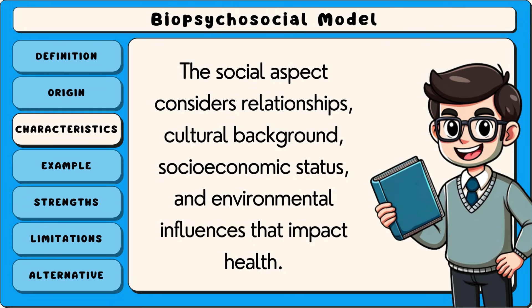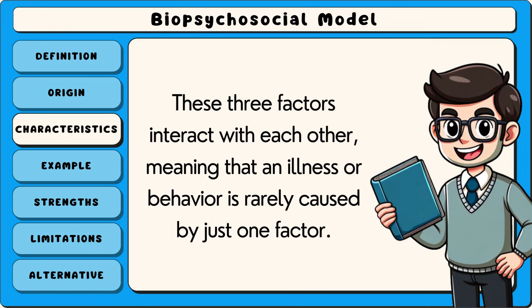The social aspect considers relationships, cultural background, socioeconomic status and environmental influences that impact health. These three factors interact with each other, meaning that an illness or behaviour is rarely caused by just one factor.